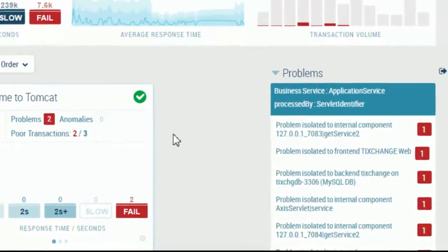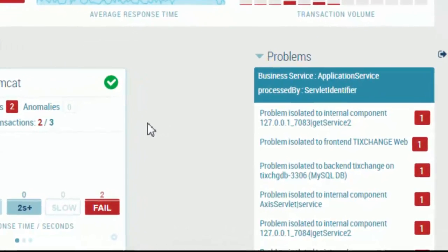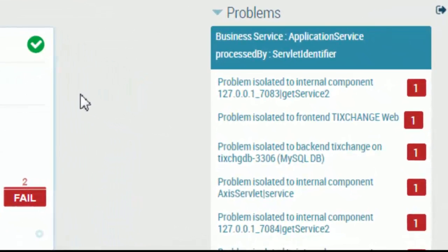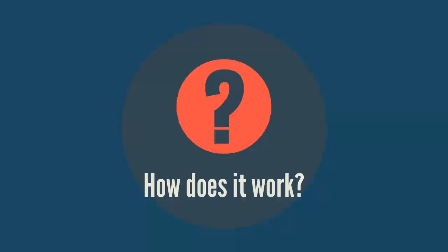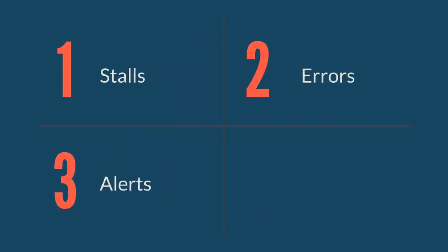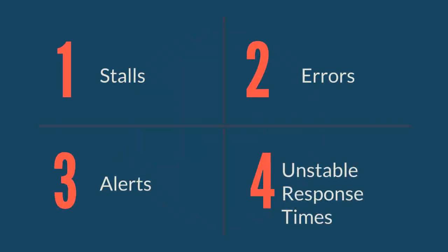You are provided with problems and anomalies that explain aspects of one or more events. So how does Assisted Triage work? Assisted Triage creates problems and anomalies about events in your system. Assisted Triage reacts to the following types of events: stalls, errors, alerts, and unstable response times.